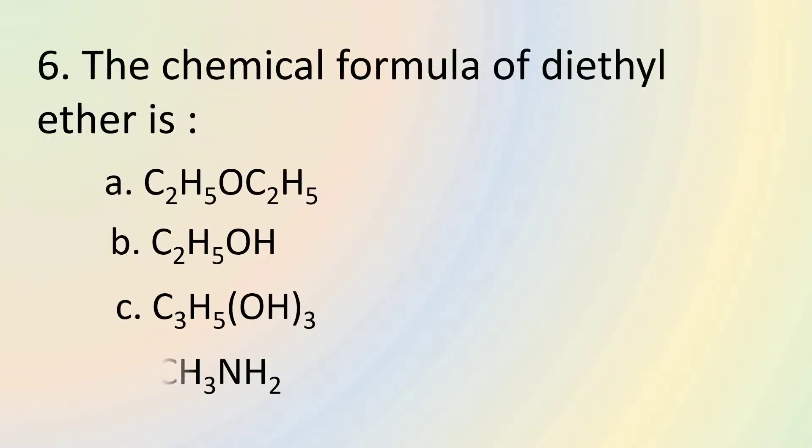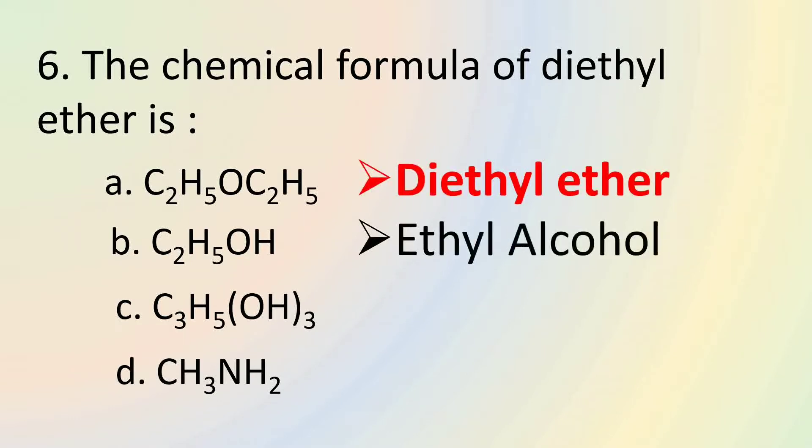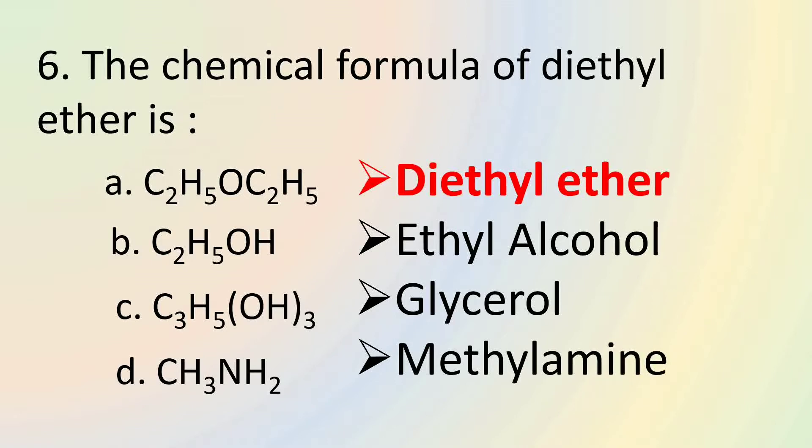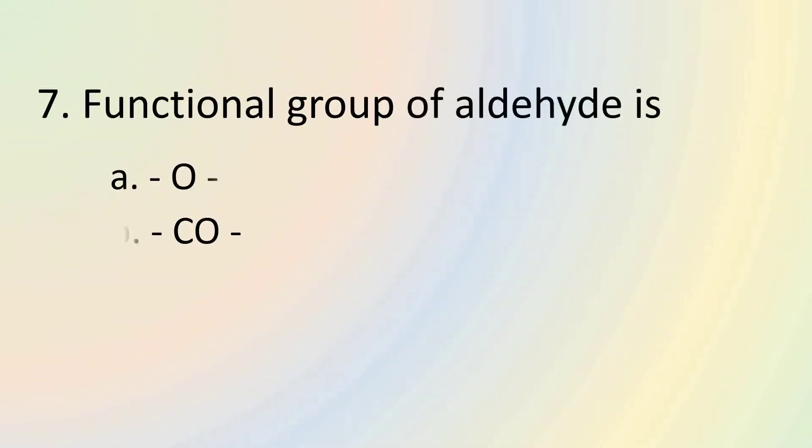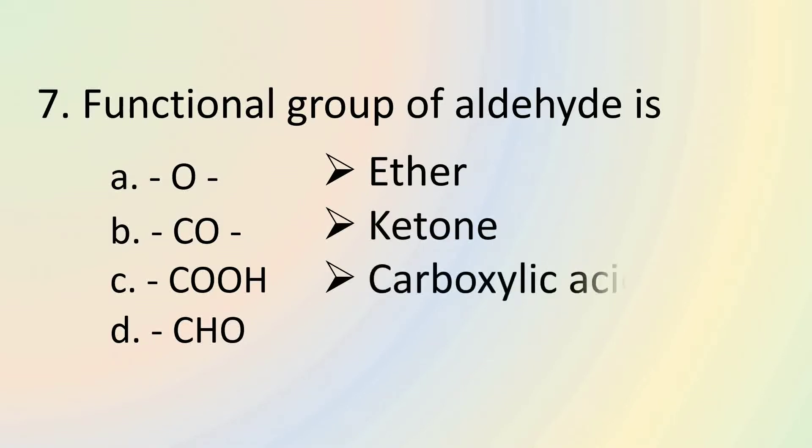The chemical formula of diethyl ether is C2H5OC2H5. C2H5OH is the chemical formula of ethyl alcohol. C3H5(OH)3 is the chemical formula of glycerol. CH3NH2 is the chemical formula of methyl amine. The functional group of aldehyde is CHO. O is the functional group of ether. CO is the functional group of ketone. COOH is the functional group of carboxylic acid.